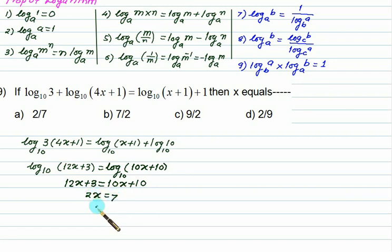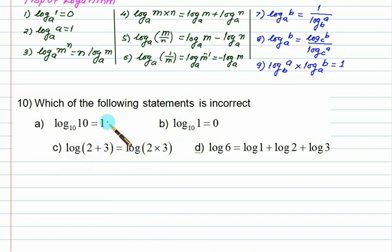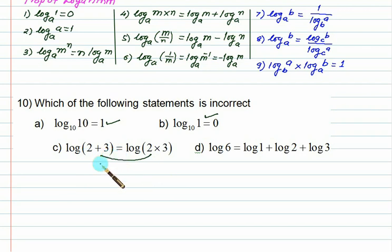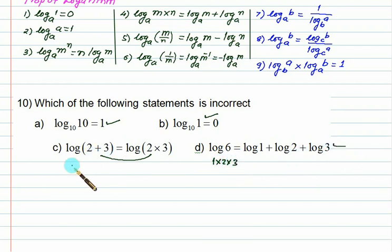Therefore x equals 7 over 2, so choice B is correct. For the final question asking which statement is incorrect: log 10 to the base 10 is correct; log 1 to the base 10 is not permitted, making it the wrong statement. Log 6 written as log 1 plus log 2 plus log 3 is allowed. However, log of 2 plus 3 must be written as a single log of 5, not a sum — that form is only permitted if written correctly.